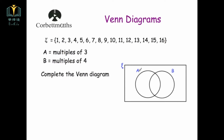So this is the Venn diagram. You've got a circle that represents A, a circle that represents B, and they overlap in case there's anything that satisfies both A and B. Then you've got a rectangle around the outside — that's very important, don't forget that — because it means if anything's not in A or B, it can go in that box. The multiples of 3 between 1 and 16 are: 3, 6, 9, 12, 15. And the multiples of 4 are: 4, 8, 12, and 16.